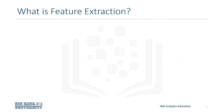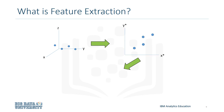Feature Extraction is the process of transforming or projecting a space composing of many dimensions into a space of fewer dimensions. This is similar to representing data in multiple dimensions to ones that are less. This is useful for when you need to keep your information but want to reduce the resources that it may consume during processing.